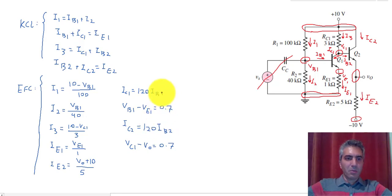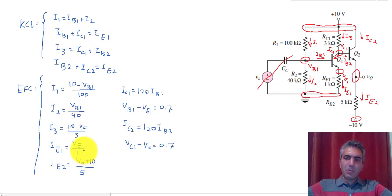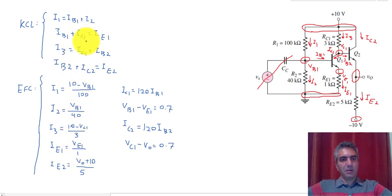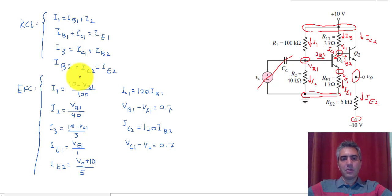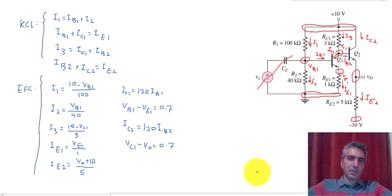It might seem overwhelming to solve this many equations at once, but once you start it's not as complicated as you may think. You can substitute all the current equations into the KCL equations and end up solving a system of four equations and four unknowns. Nevertheless, I'm going to show you how to do it using a calculator. There's a specific calculator called Maxima that solves systems of equations. There are also graphing calculators that do the same — I'll show you how to use Maxima.